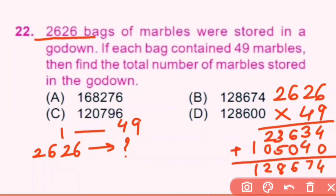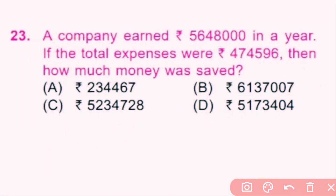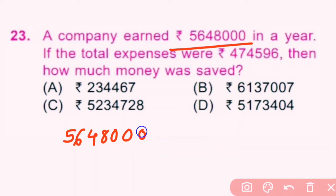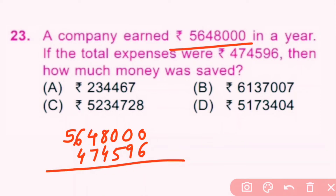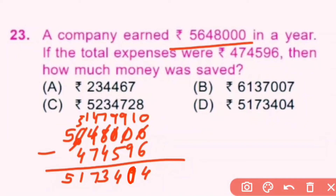Question number 23: A company earned ₹56,48,000 in a year. If total expenses were ₹4,74,596, then how much money was saved? We subtract expenses from earnings: 56,48,000 − 4,74,596 = ₹51,73,404 was saved. D is the correct answer.